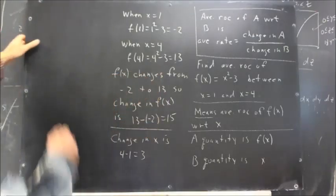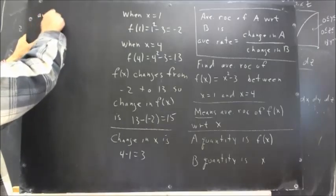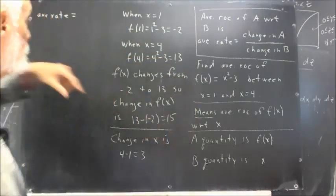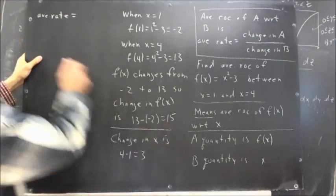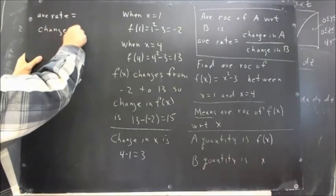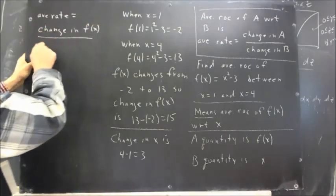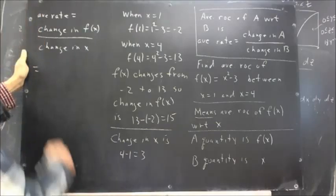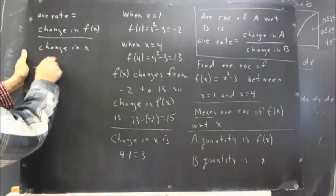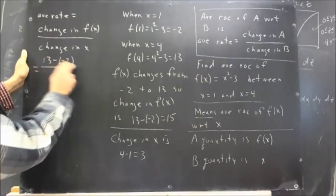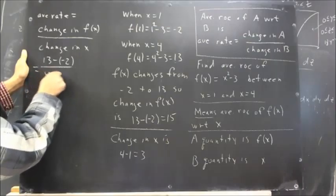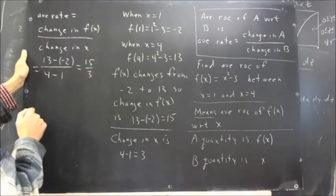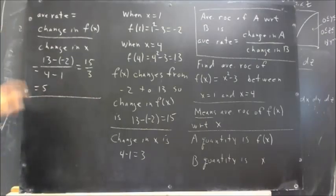The average rate of change is the change in the A quantity divided by the change in the B quantity — that is, change in F(x) divided by change in x. The change in F(x) is 15, and the change in x is 3, giving us 15 over 3, which equals 5. That's our average rate of change.